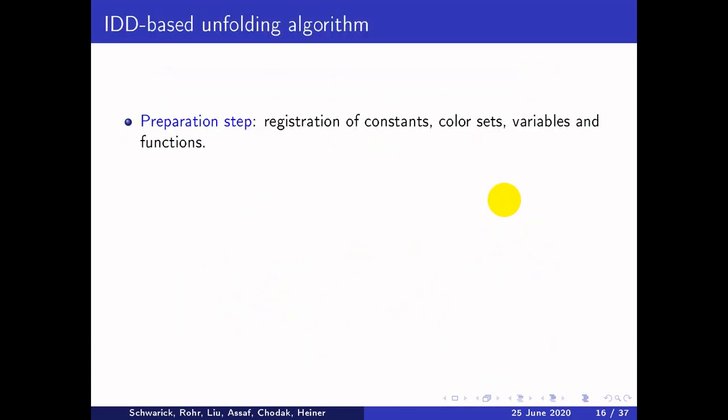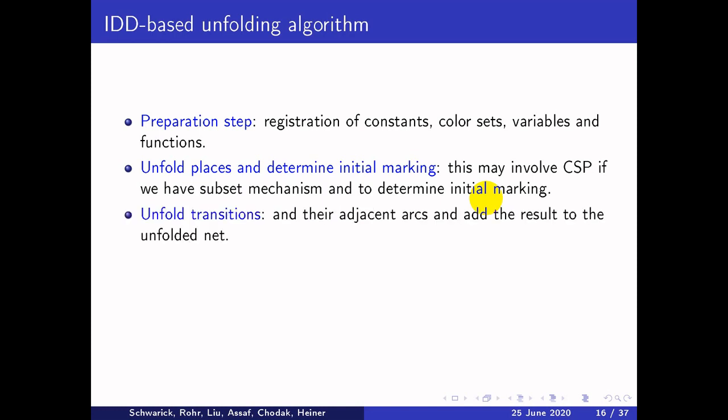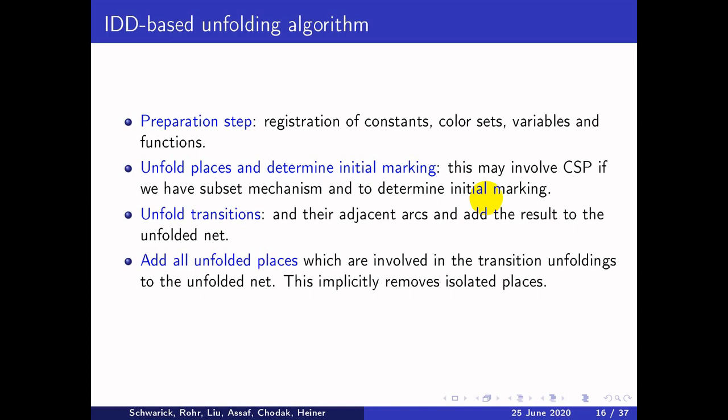The IDD-based unfolding algorithm consists of four steps. The first is a preparation step including registration of constants, color sets, variables, and functions. Next, unfold places and determine the initial marking — this may involve CSP if we have a subset mechanism. After that, unfold transitions and their adjacent arcs and add the result to the unfolded net. Finally, add all unfolded places involved in the transition unfoldings to the unfolded net, which implicitly removes isolated places. The entire code is given in the paper.